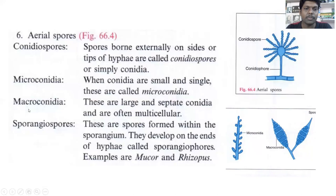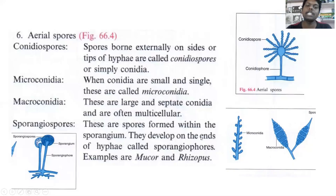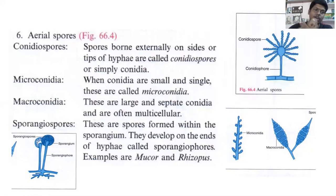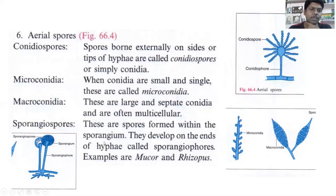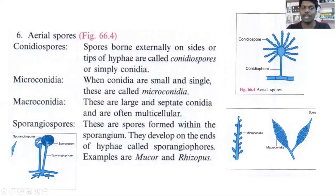The last type is sporangiospores. Sporangiospores have a sporangium — a ball-like structure — within which the spores are present. The best examples are Mucor and Rhizopus. These spores are formed within the sporangium and develop at the ends of the hyphae.